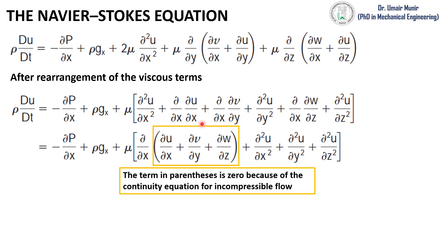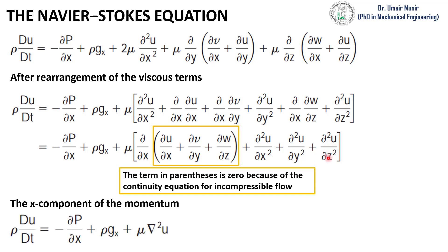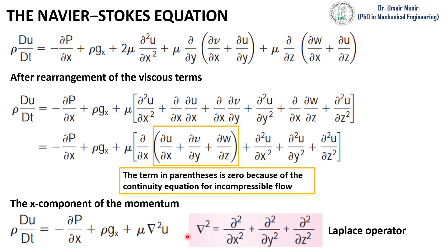If you notice, this highlighted part of the equation is the mass conservation, and for incompressible flow this term should be equal to zero. If we put it equal to zero, then this whole term will be equal to zero. If we further simplify this equation, the only term that is left is the partial squared u over partial x squared, partial squared u over partial y squared, and partial squared u over partial z squared, which is the x-component of the momentum equation. Here del-squared is the Laplace operator, which is defined by this relationship.